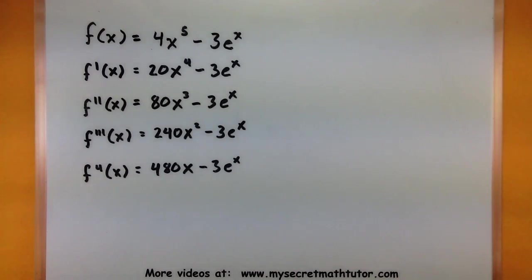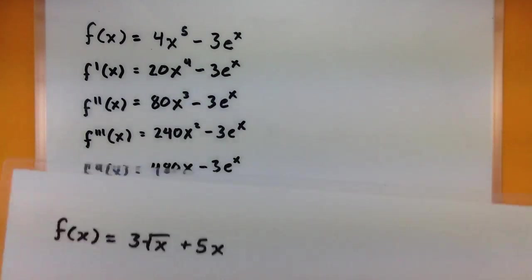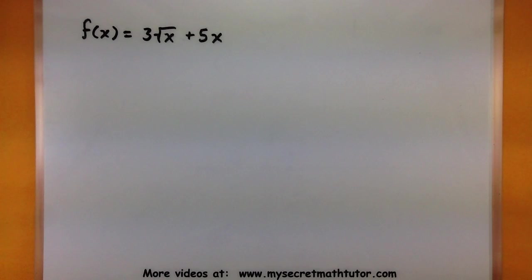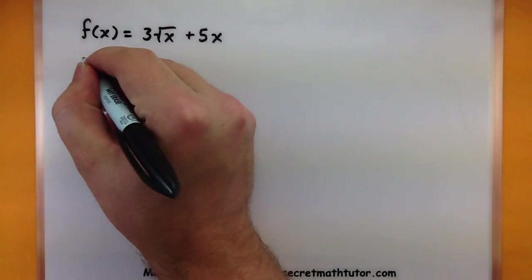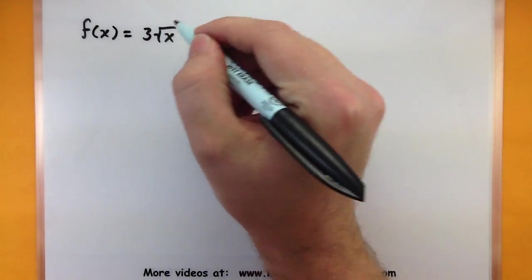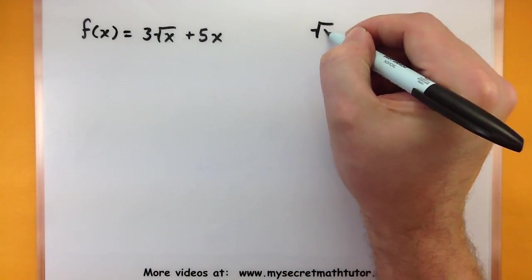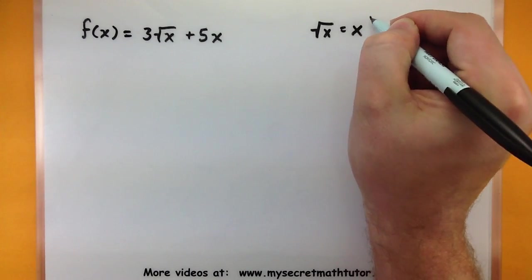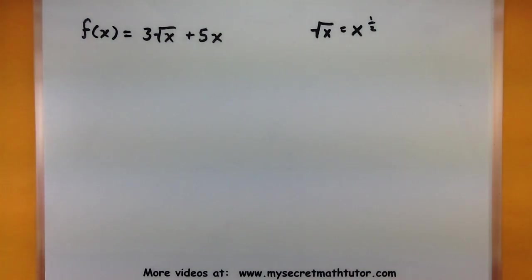Let's look at another example of a function and take a few derivatives of that one as well. This one is 3 times the square root of x plus 5x. And if you want you can imagine the square root as x to the 1 half. It usually makes doing the derivative a little bit easier.